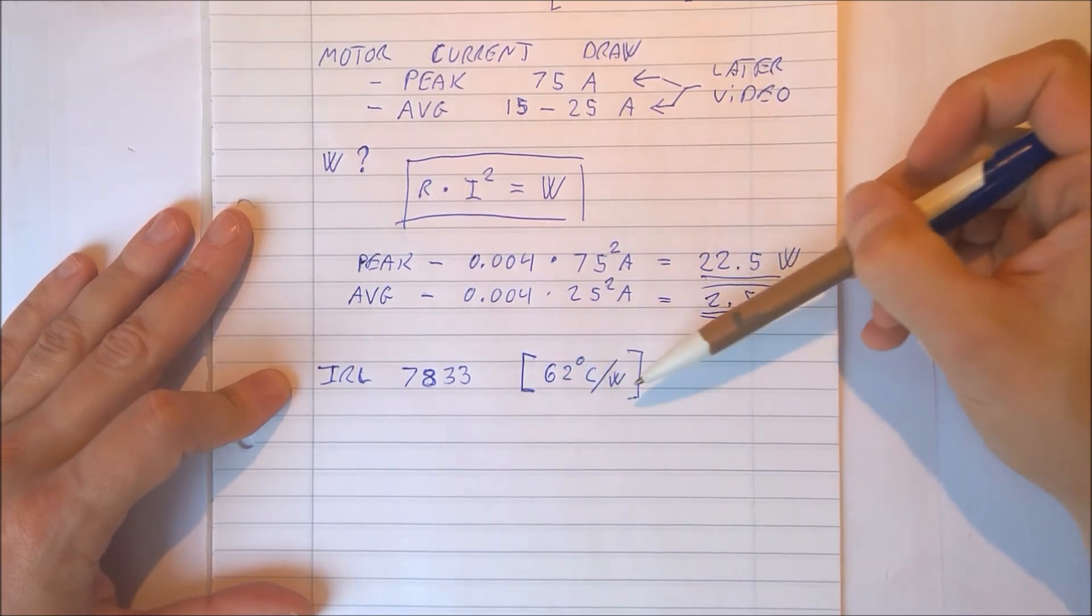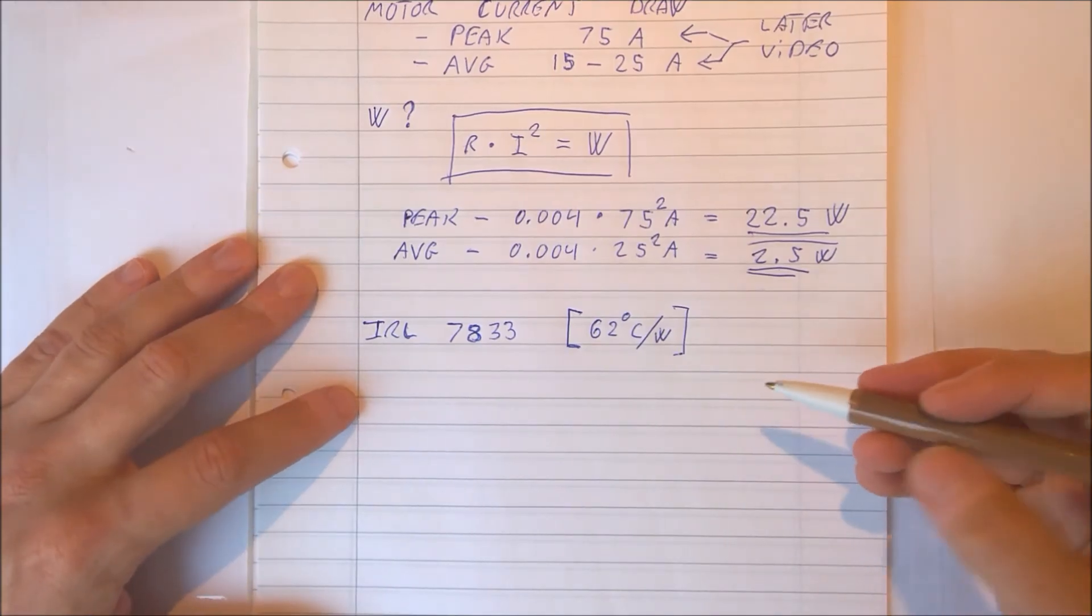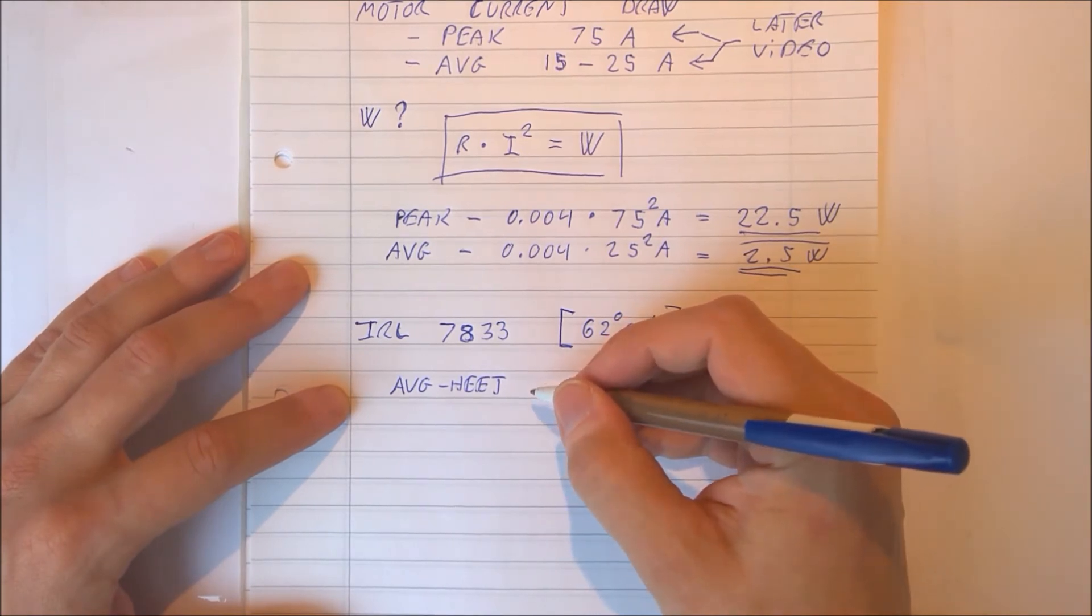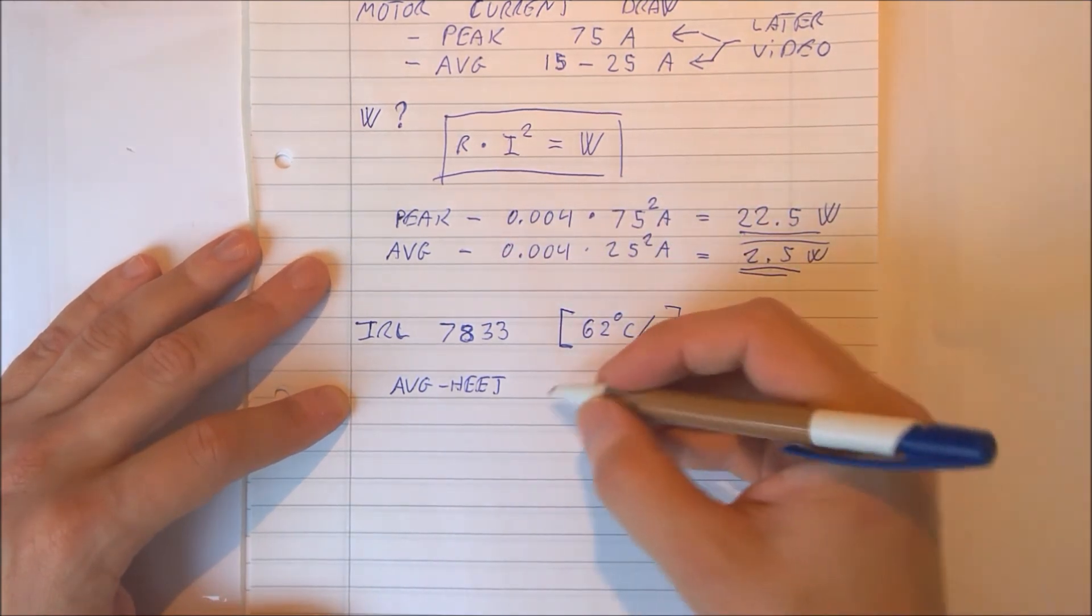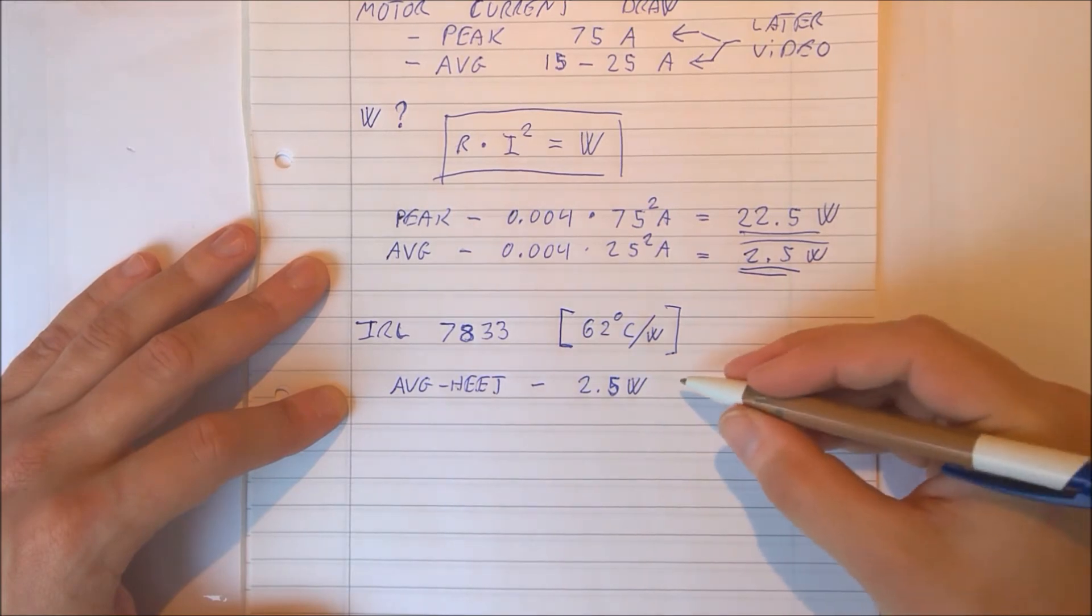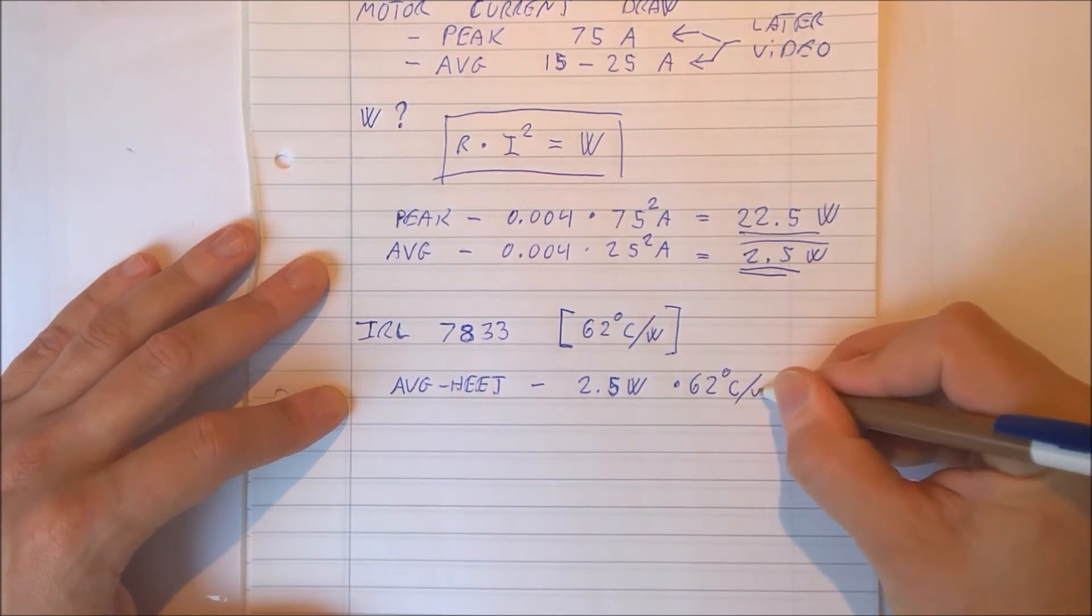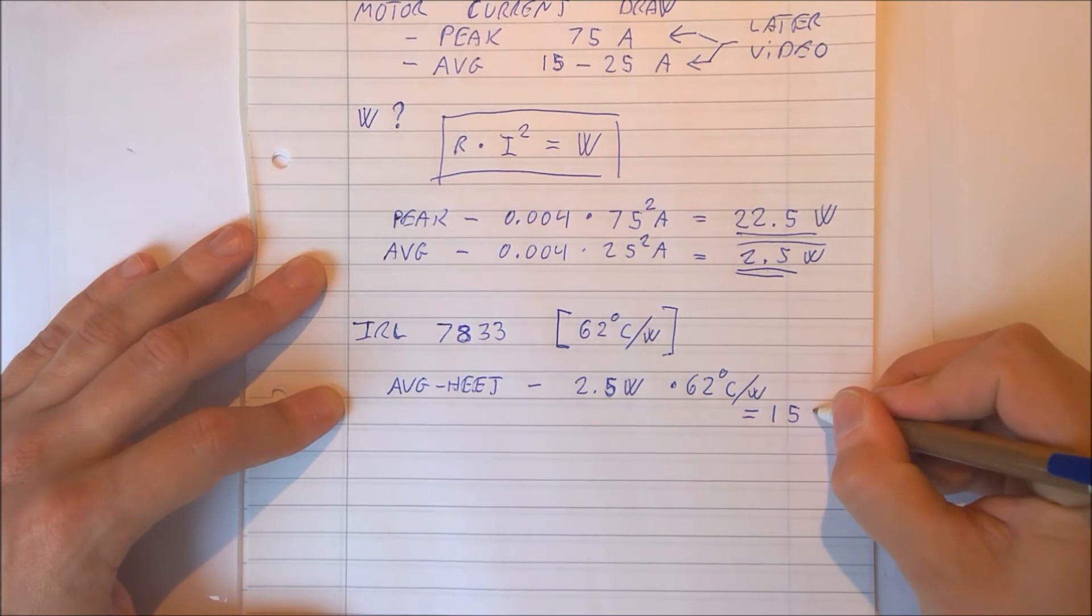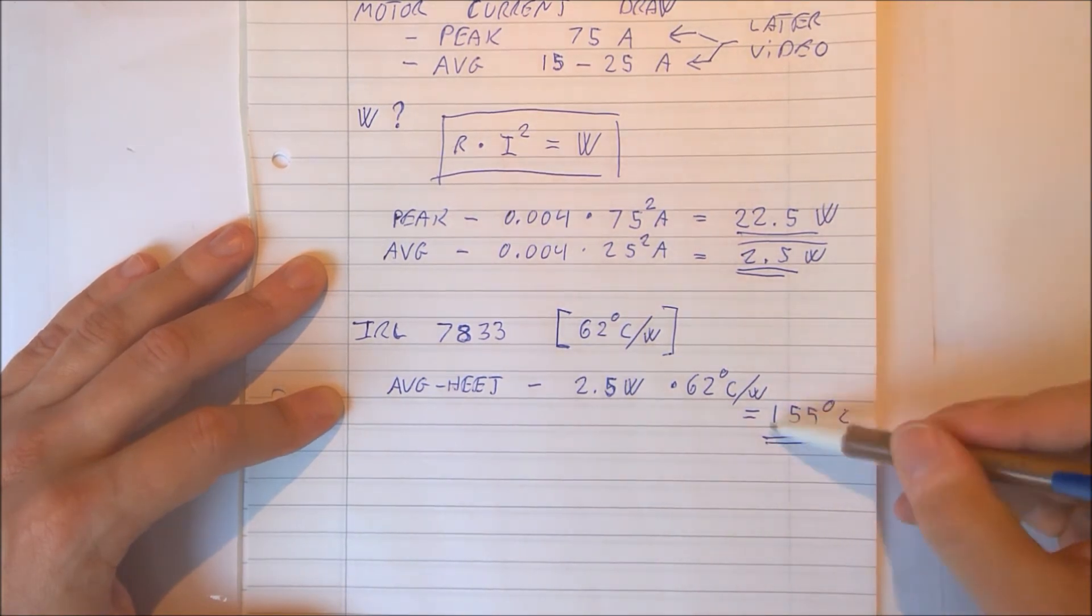What this means is that this MOSFET will rise 62 degrees for each watt it has to dissipate. To estimate how hot the MOSFET will be, take the average watt it has to dissipate, which is 2.5 watts of power, times 62 degrees Celsius per watt. And that equates to 155 degrees Celsius. So that's very hot.